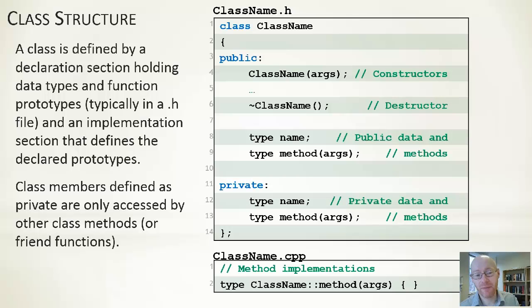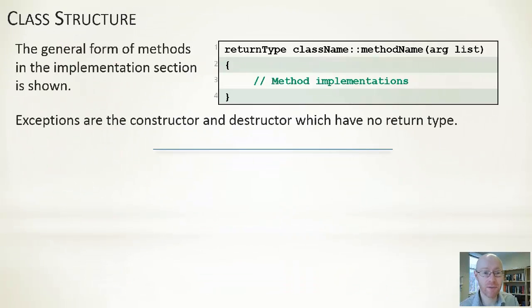General form of a method you can see here. Usual stuff, the only exceptions are our constructors and destructors. They don't return anything. But for normal methods we've got a return type. We've got the name of the class. Then we're indexing into that based on the method name and the argument list for it. So that's much the same as before.